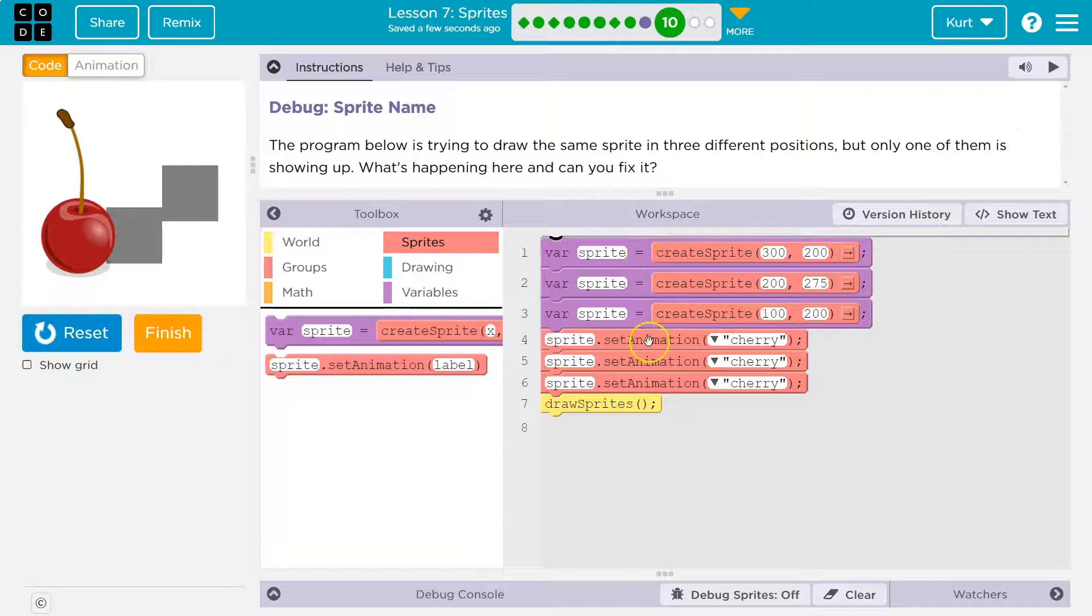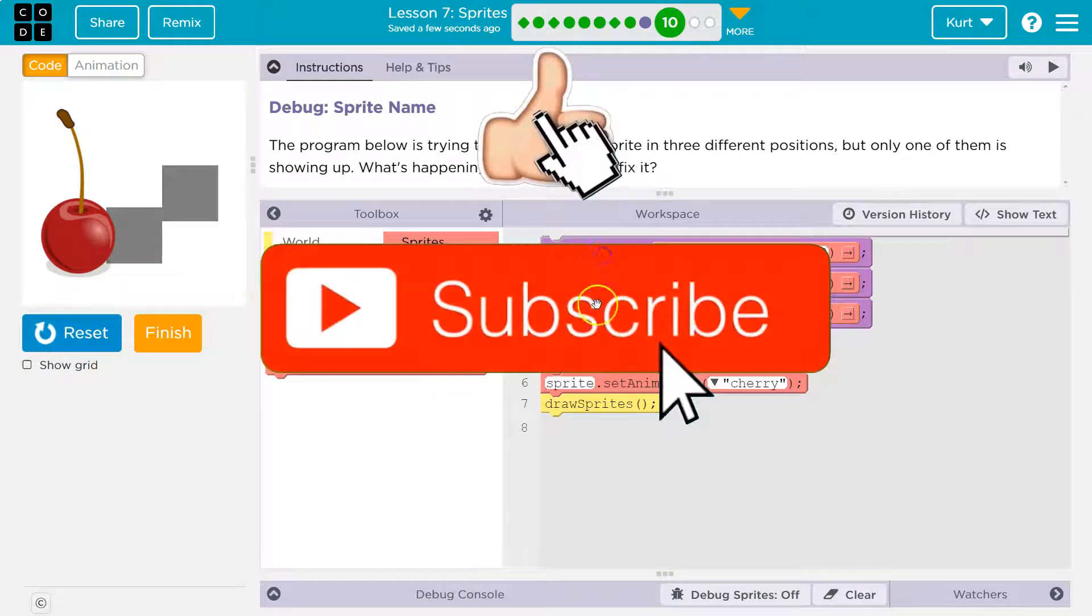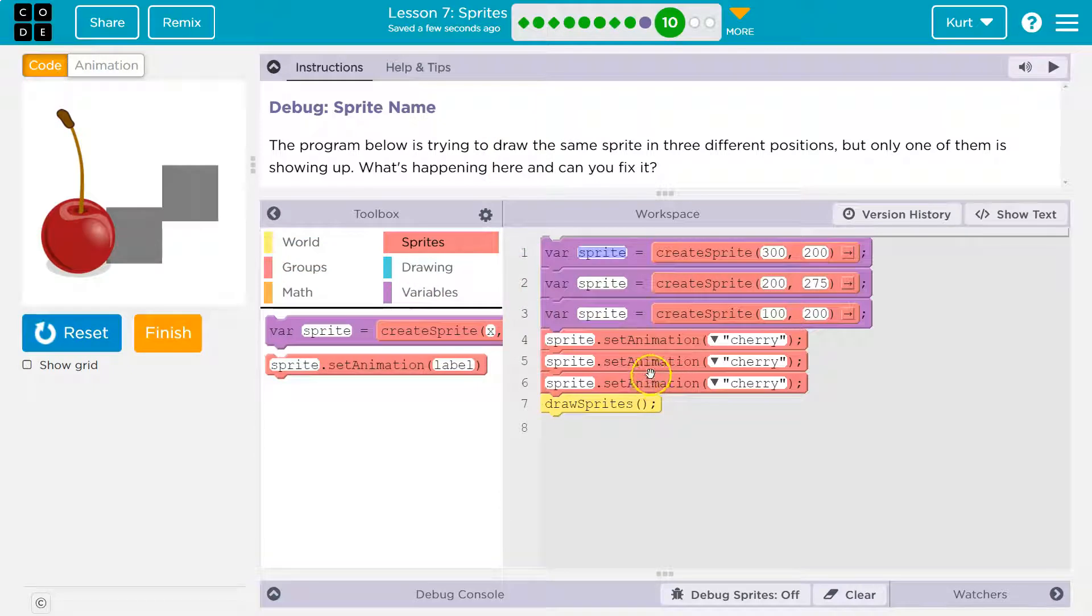All right, so we have sprite, sprite, sprite. All of these have the exact same name. So we have three variables called sprite, and then we set the cherry to three variables. That is rough.